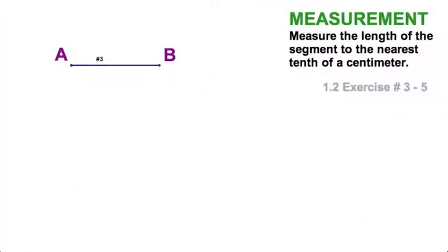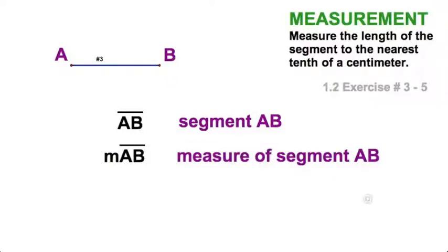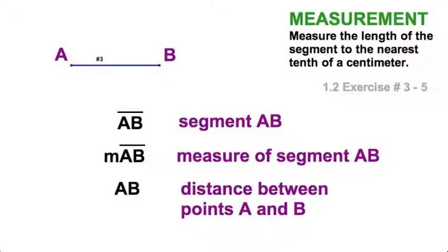We're going to start by reviewing the measurement of a segment. Let's get a little vocabulary first. Looking at segment AB — exercise number three in your textbook — I can represent it several ways. When I write capital letters AB with a bar on top, that stands for the line segment AB. When I add a lowercase m, that says 'the measurement of line segment AB.' You'll also see AB with no line over the top, which means simply the distance between points A and B.